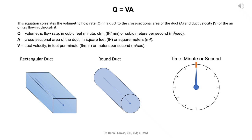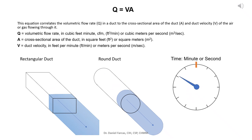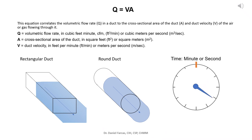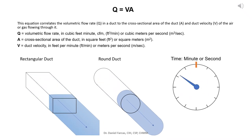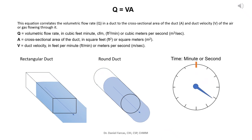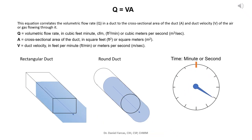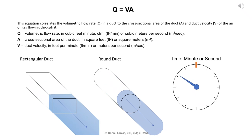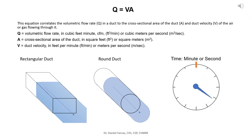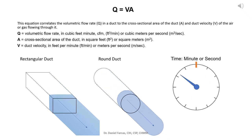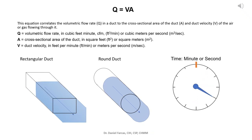There are two common types of ducts: rectangular and round ducts, but it's also important to visualize these processes in our minds. The volumetric flow rate in a duct can be visualized as the total volume of air or gas moving through an area per unit of time, which can be a minute or second, as you can see in the animation. Round ducts are usually more efficient than rectangular ducts because they are less air flow-resistant.